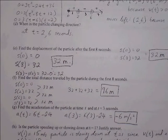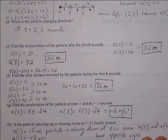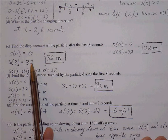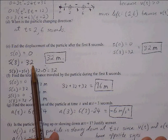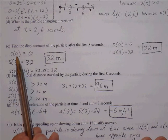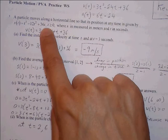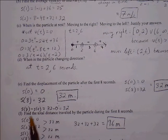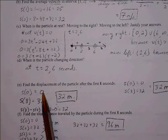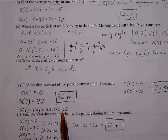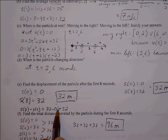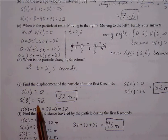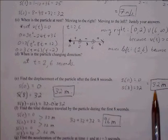Find the displacement. Displacement is the change in distance between the final and initial position — final minus initial. Plugging 0 into the position function gives 0; plugging 8 in gives 32. Displacement is s of 8 minus s of 0, so 32 minus 0 equals 32 meters. Note that displacement can be negative — it's always end minus initial position.